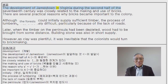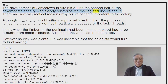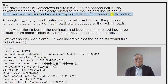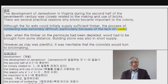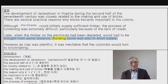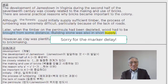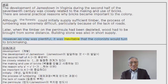The development of Jamestown in Virginia during the second half of the 17th century was closely related to the making and use of bricks. There are several practical reasons why bricks became important to the colony. Although the forests could initially supply sufficient timber, the process of lumbering was extremely difficult, particularly because of the lack of roads. Later, when the timber on the peninsula had been depleted, wood had to be brought from some distance. Building stone was also in short supply; however, as clay was plentiful, it was inevitable that the colonists would turn to brick making.